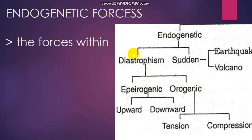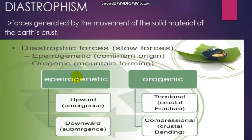Endogenetic forces can be divided into diastrophism and sudden movements. Sudden movements are earthquakes and volcanoes, which are of relatively lesser importance in this context, so we will focus on diastrophism. Diastrophism can be further divided into epeirogenic and orogenic processes.